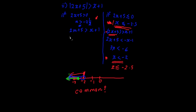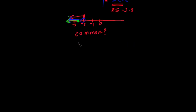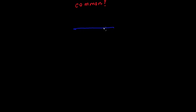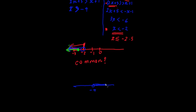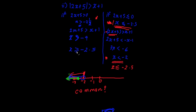For the positive case: 2x plus 5 is greater than x plus 1. Bringing x's to one side gives x is greater than minus 4. The condition required x to be greater than minus 2.5, and our answer says x is greater than minus 4. On the number line, the common area between these two is x greater than minus 2.5. So the solution for this case is simply x greater than minus 2.5.